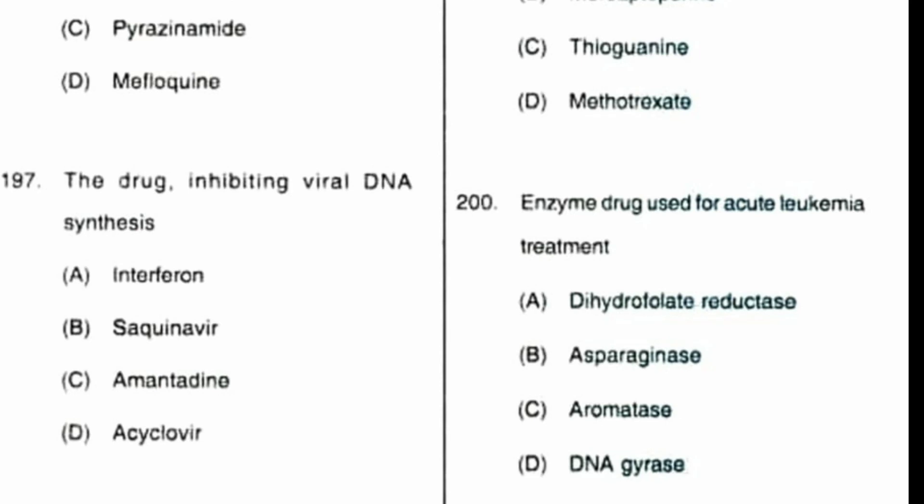Question number 200: which enzyme drug is used for acute leukemia treatment? Option A: dihydrofolate reductase, B: asparaginase, C: aromatase, D: DNA gyrase. Asparaginase is used for acute leukemia treatment. Option B is the correct answer.